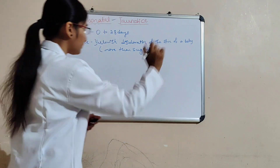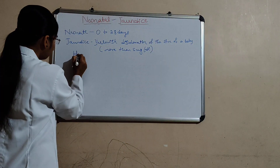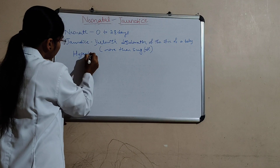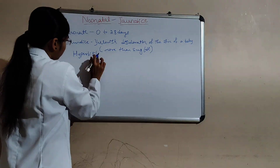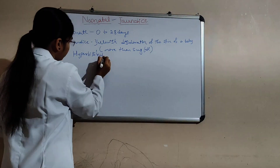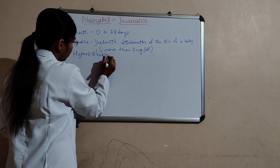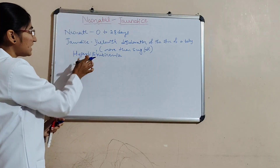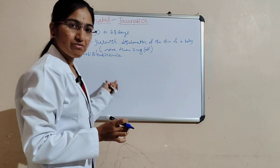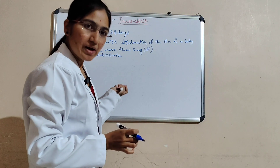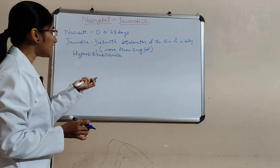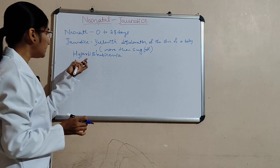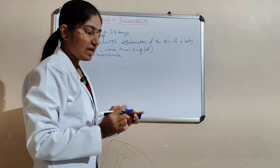Here, what happens is hyperbilirubinemia. Hyperbilirubinemia means there is an increased bilirubin level in the blood — increased serum bilirubin in the blood. That is hyperbilirubinemia.